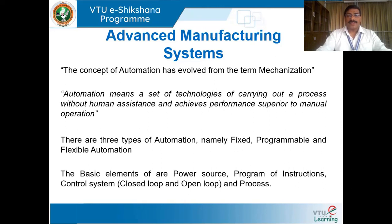Most multinational and big manufacturing companies will go for automation if they can afford it. There are three types of automation: fixed automation, programmable automation, and flexible automation.